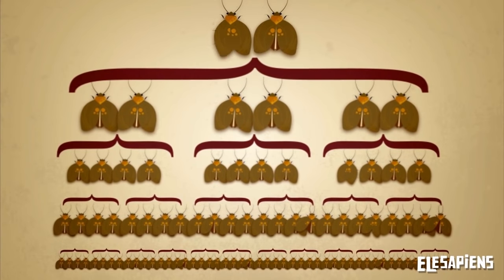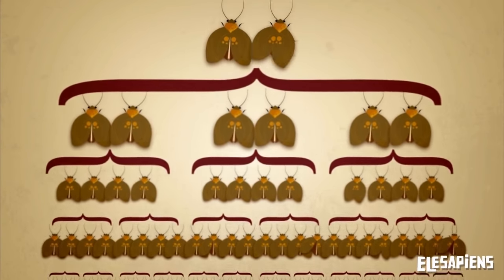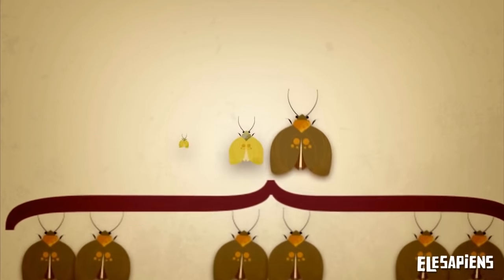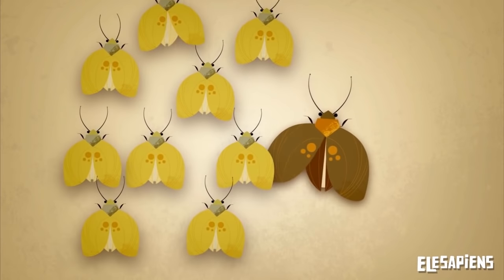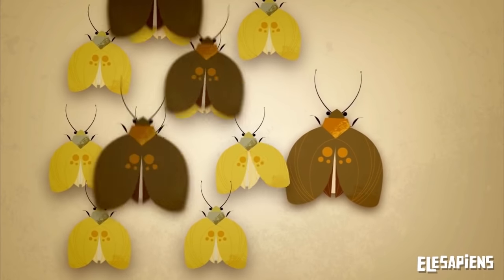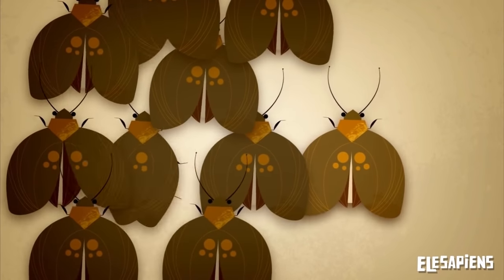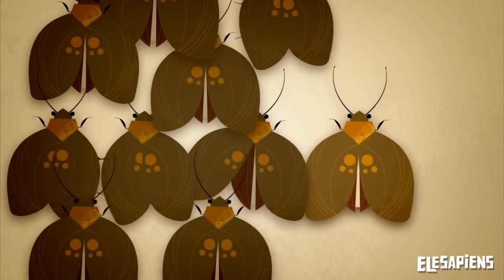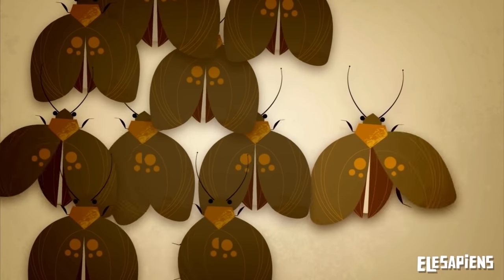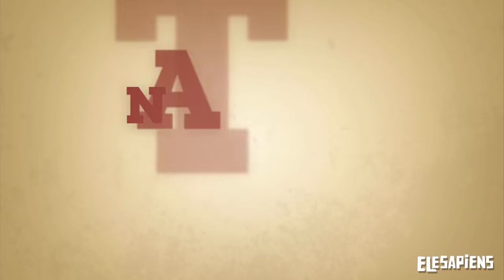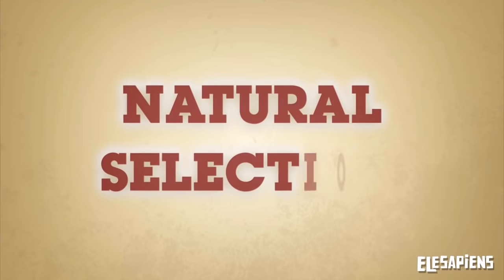So, generation after generation, a trait that was rare occurs more frequently, becoming the norm within the species. This process is called natural selection.